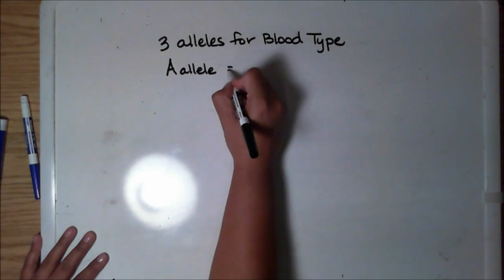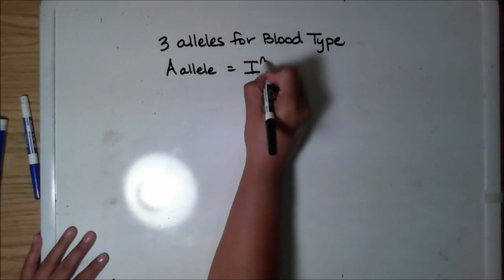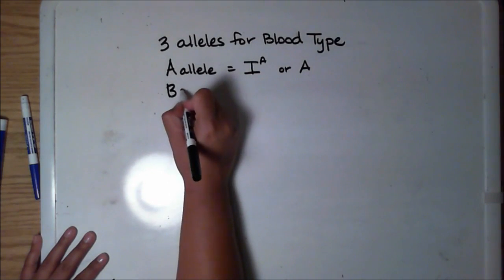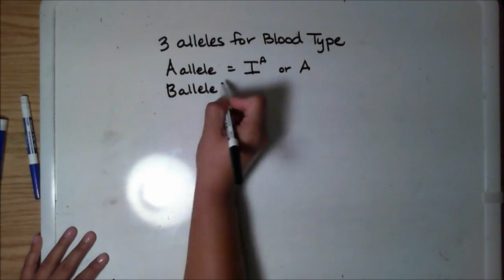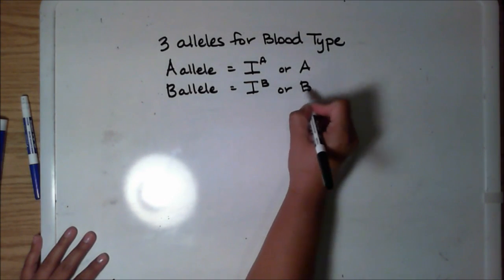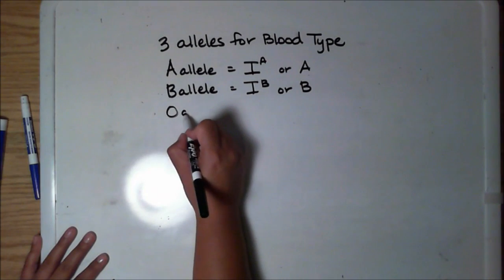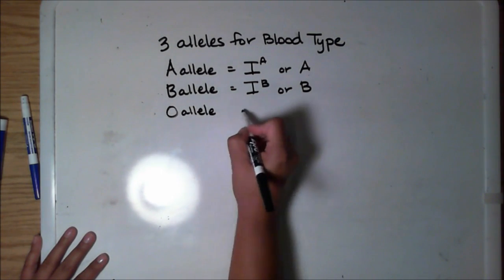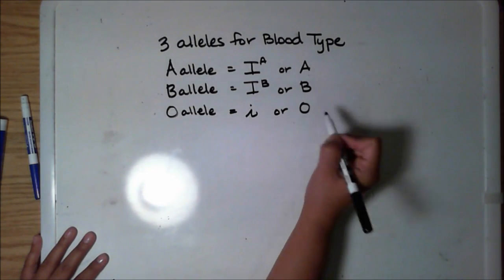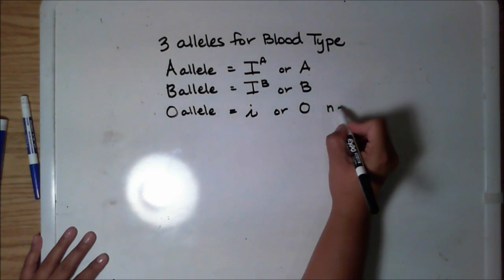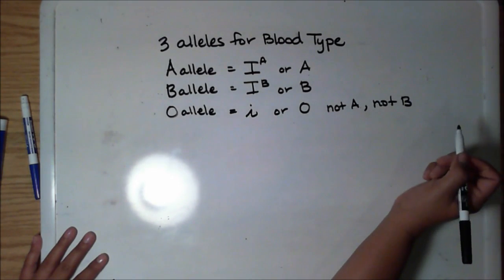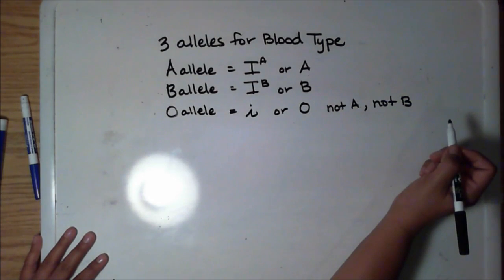There's the A allele, which we can write two ways: an I with a capital A as a superscript, or just a big capital letter A. We can also write the B allele as an I with a capital B as a superscript, or just a capital letter B. The O allele is kind of interesting — we write it as a lowercase i, or simply as the letter O. Really, there's not an O protein; O means that it's not A and it's not B.